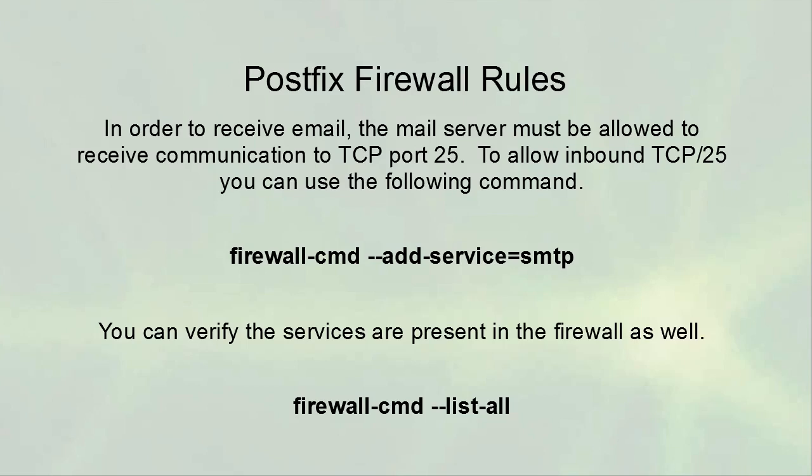In order to receive mail, the mail server must be listening and also allowed to receive communications on TCP port 25 from outside machines. To allow inbound TCP port 25, use the command: 'firewall-cmd --add-service=smtp', which will allow port 25 through. Verify services are present with 'firewall-cmd --list-all'. To make this persistent across firewall restarts, add the '--permanent' option so it's stored in the firewall configuration files.